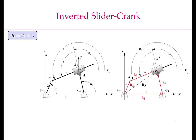To solve the direct position kinematics problem, we have to first assign a vector to each link. Let us assign O2A to link 2, BA to link 3, O2O4 to link 1, and O4B to link 4. This is shown on the right-hand side, where O2A is R2, BA is R3, O2O4 is R1, and O4B is R4. The angle theta-2 is shown here, theta-4 is shown here, theta-3 is this angle, and theta-1 in this picture is 0.